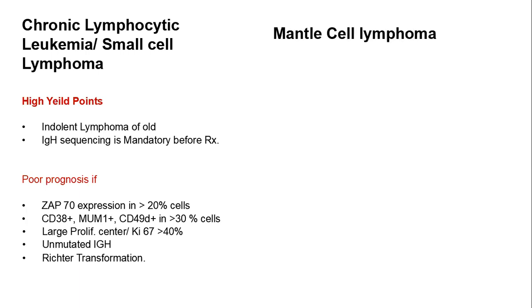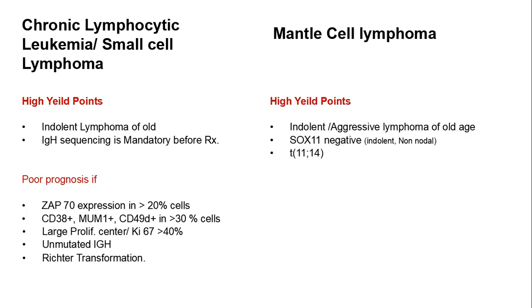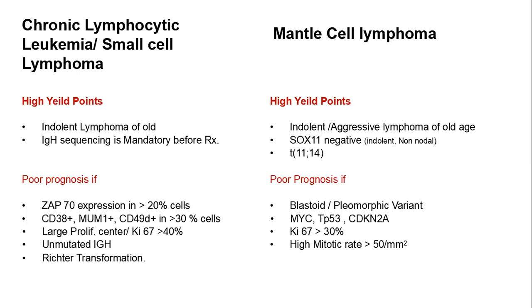High-yield points for mantle cell lymphoma: it can be indolent or aggressive and is also seen in old age. SOX11-negative and non-nodal site presentation indicates an indolent mantle cell lymphoma. The important translocation is t(11;14). Poor prognostic factors are blastoid or pleomorphic variant, MYC, TP53, and CDKN2A mutations, Ki-67 more than 30%, or a high mitotic rate of more than 50 per millimeter squared.